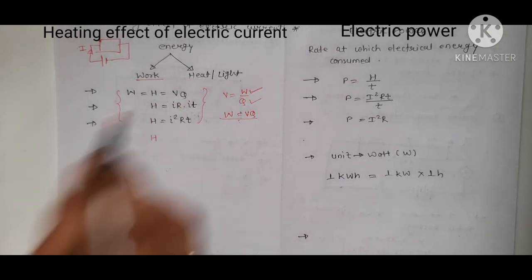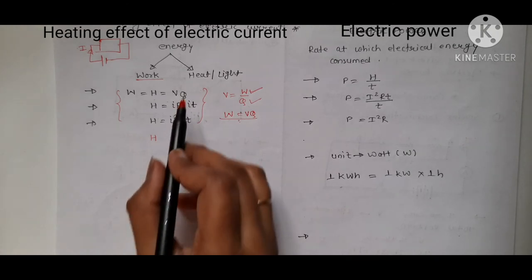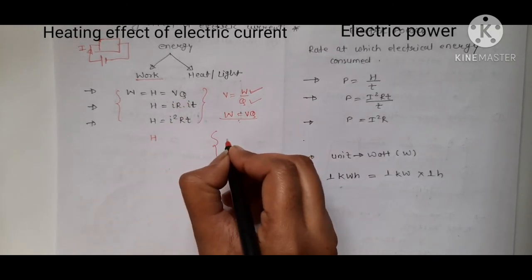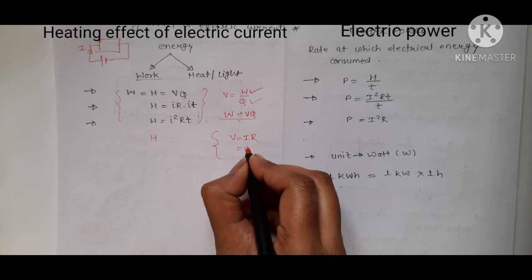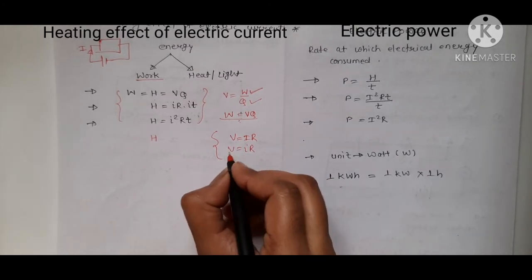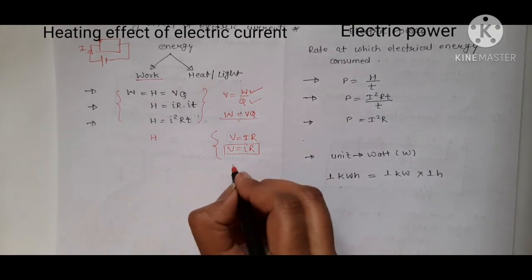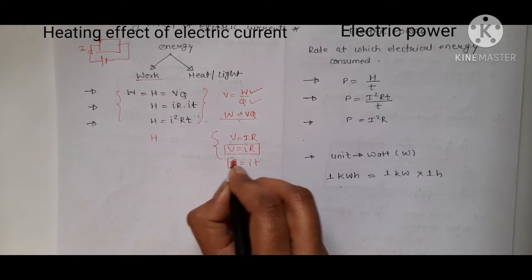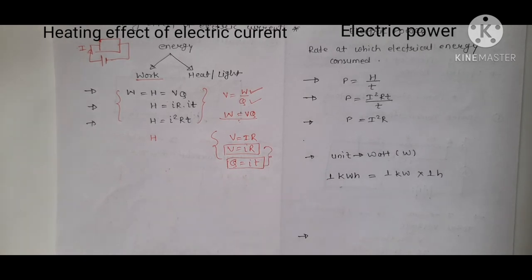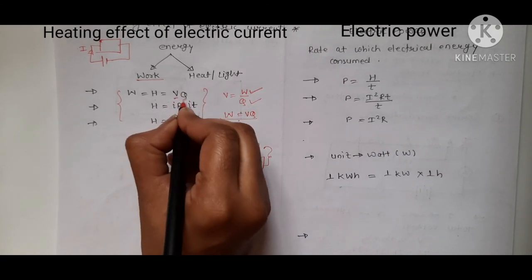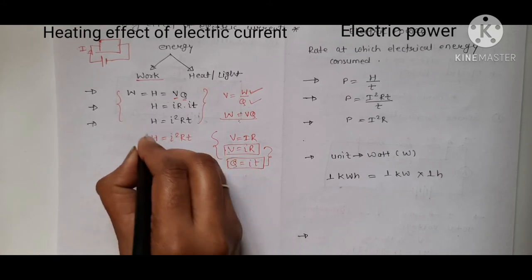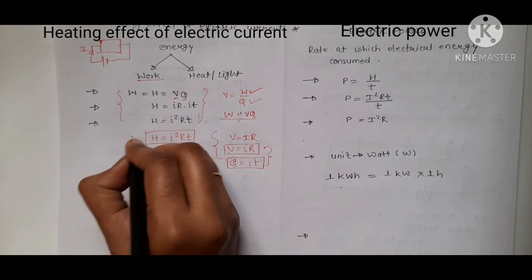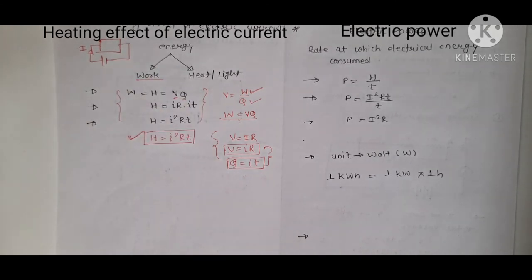So H = V × Q. Now applying Ohm's law: V = IR, and from the definition of current, Q = I × T. Substituting both values, H = (IR)(IT) = I²RT. This is the important formula for the heating effect of electric current: H = I²RT.